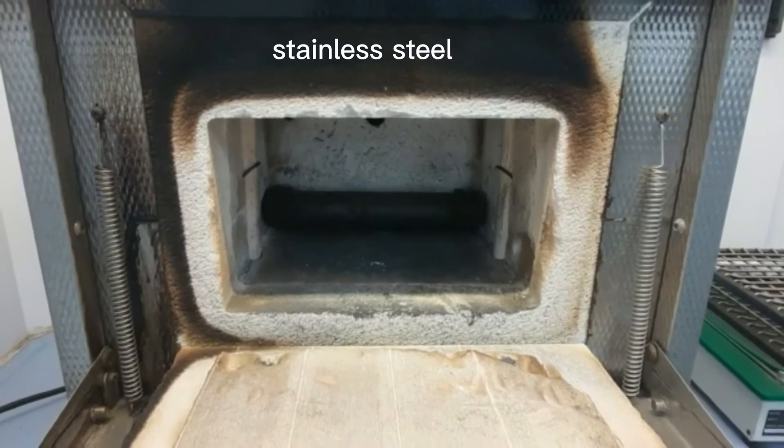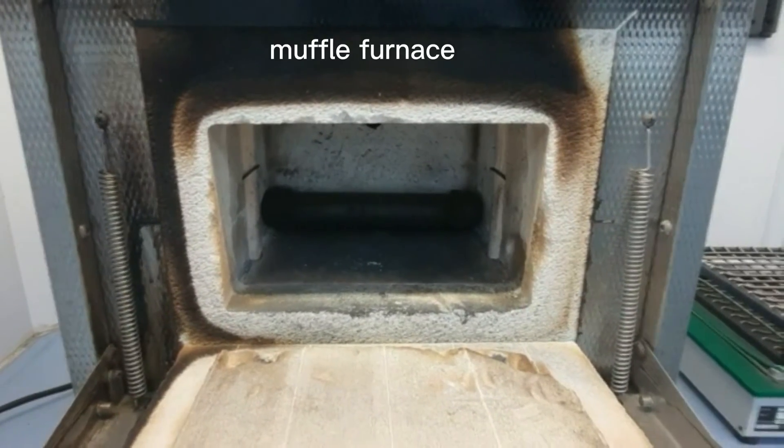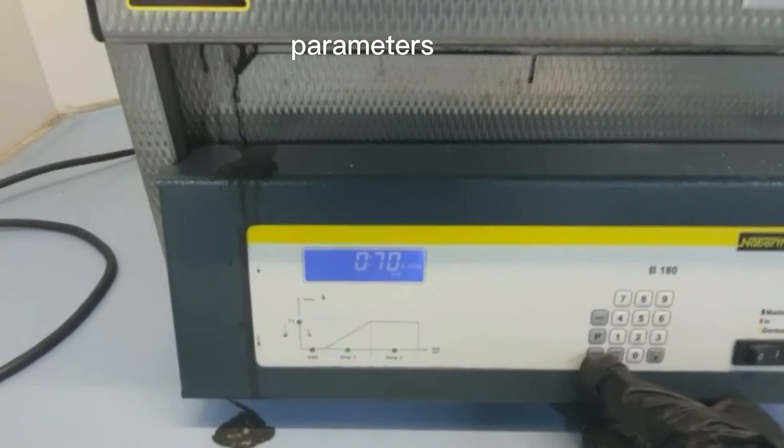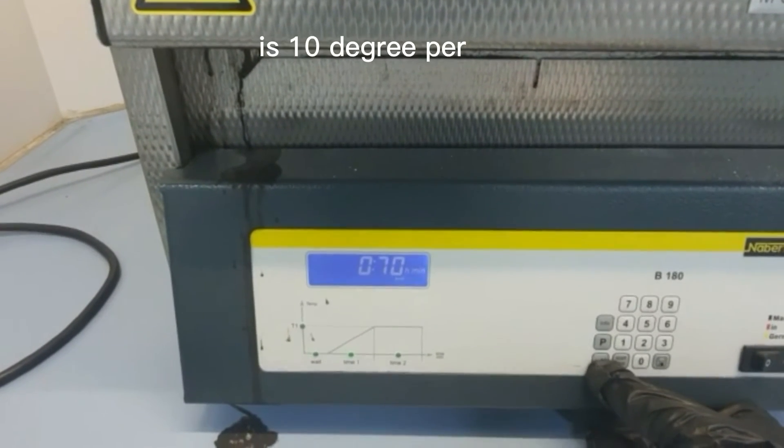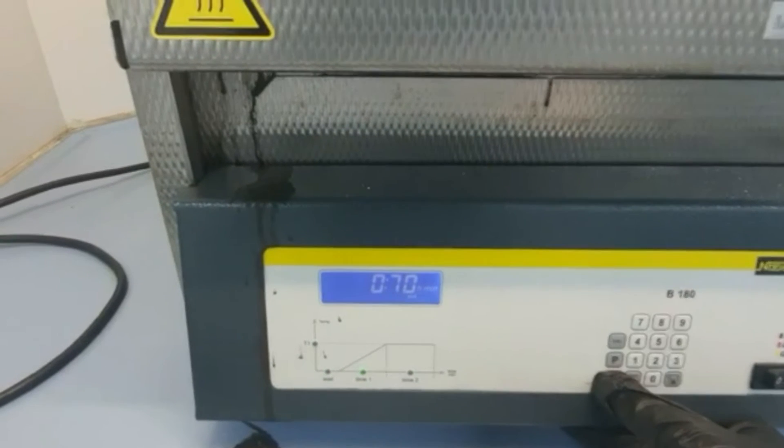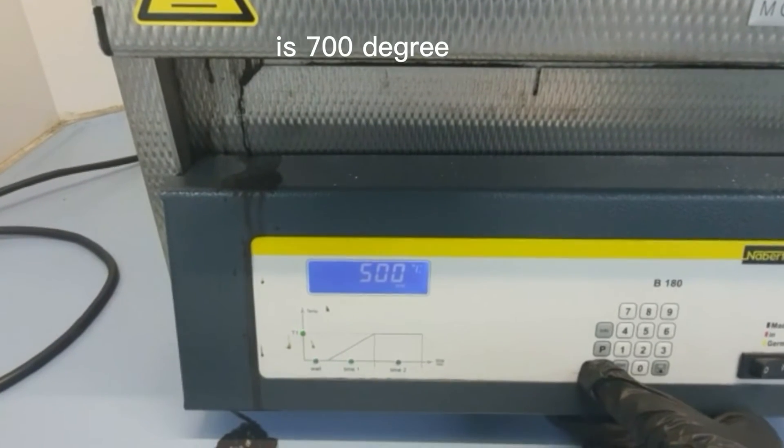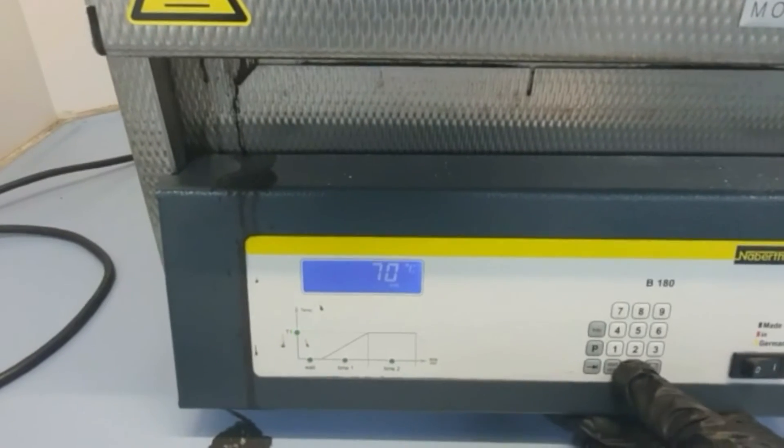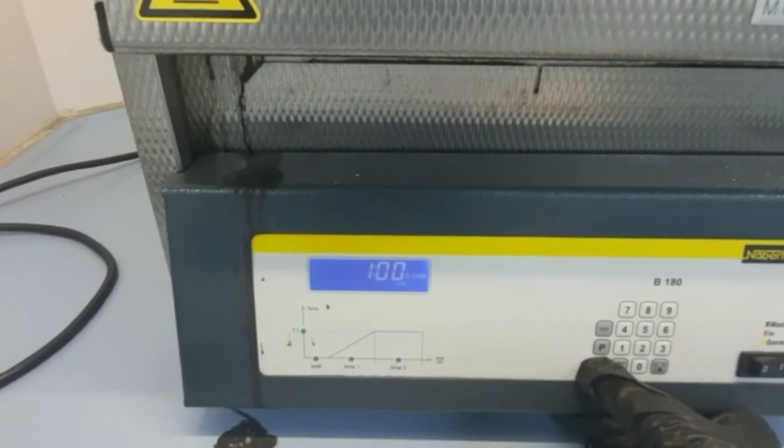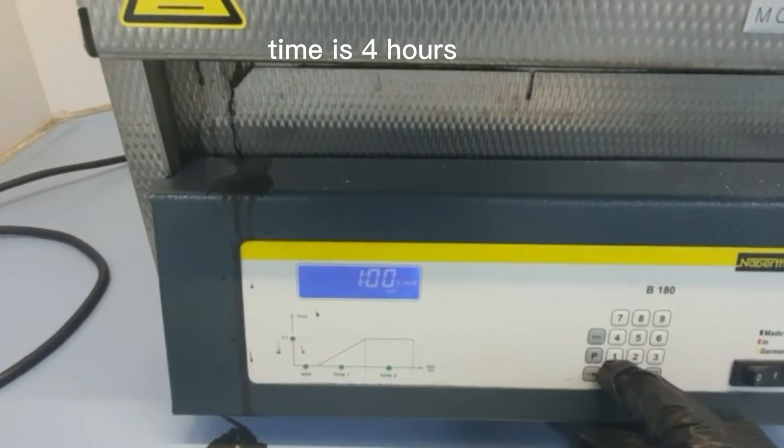Transfer the stainless steel tubes into muffle furnace. Now set the pyrolysis parameters: the heating rate is 10 degrees per minute, the heating temperature is 700 degrees, and the heating time is 4 hours.